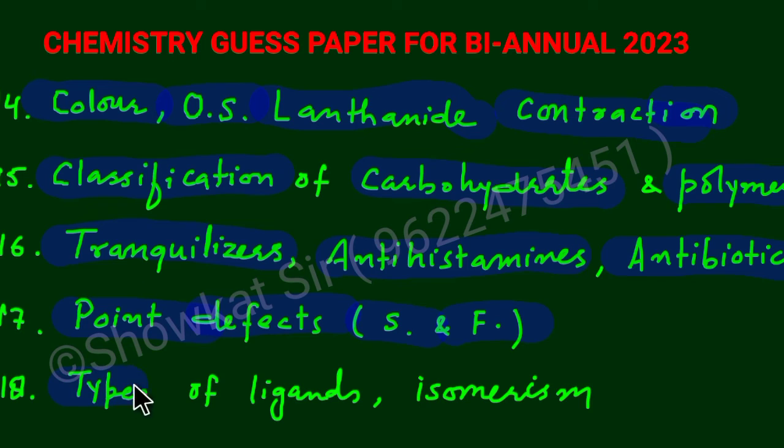And then you will here study the types of ligands. We are having monodentate, bidentate, polydentate, we are having ambidentate. Next is very important, that is the isomerism and its types in coordination compounds. We are having structural isomers, we are having stereoisomers, and I hope that you will study all types of isomers here.